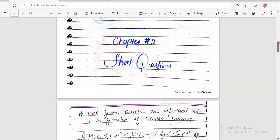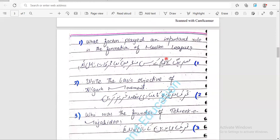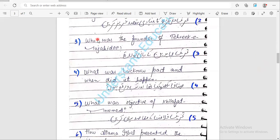Let's move to chapter number two. Short questions important: What factors played an important role in the formation of Muslim League? Question number two: Write the basic objective of Aligarh movement - why was Tehreek-e-Aligarh started? Question number three: Who was the founder of Tehreek-e-Aligarh? I have forgotten to write.